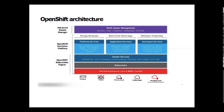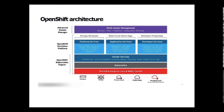This is the OpenShift architecture. At the bottom you have the infrastructure layer where you can install Red Hat OpenShift — physical servers, virtual servers, private cloud, public cloud, and managed cloud. On top of that you install Red Hat Enterprise Linux or RHEL CoreOS, then Kubernetes, and then cluster services such as automated operations, monitoring, registering, networking, router, virtualization, and OLM. These three layers together form the OpenShift Kubernetes Engine.